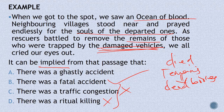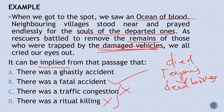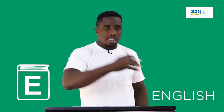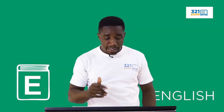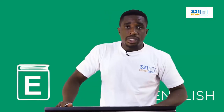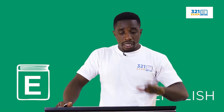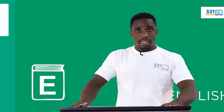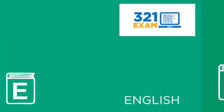What we discovered: the examiner did not expressly tell us there was an accident in the passage, but we could deduce from what the writer stated that there was a fatal accident. This brings us to the end of this lesson. See you in the next lesson.